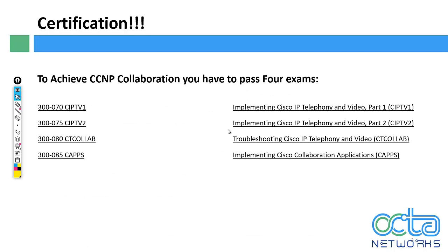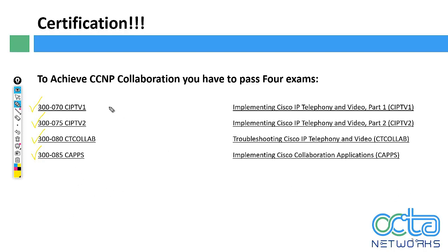The four exams are: 300-070 CIPT1 - that is Cisco IP Telephony Part One; 300-075 CIPT2 - Implementing Cisco IP Telephony and Video Part Two; then there is video troubleshooting; and 300-085 CAPPS - Implementing Cisco Collaboration Applications.